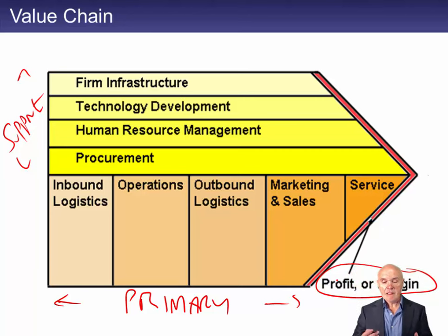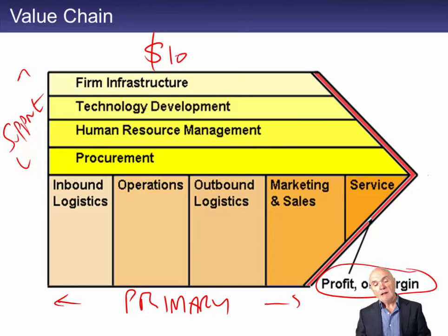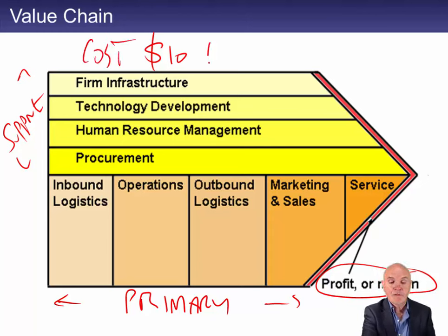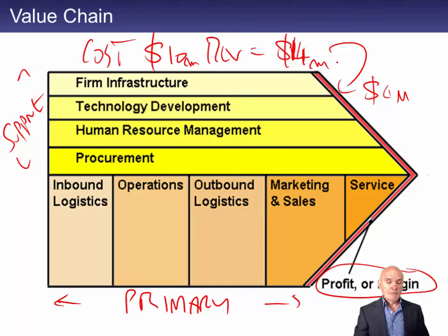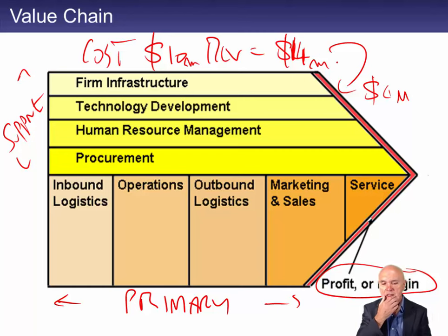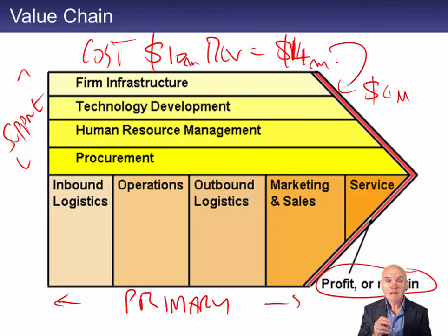All these activities have costs. Say the total cost amounts to 10 million and revenue equals 14 million — you're making a margin of 4 million. Porter says this is a kind of magic: how come you spend 10 million and people give you 14 million? The only logical reason is that you must be doing something they value — something they either can't do themselves, don't want to do, or can't do as efficiently.